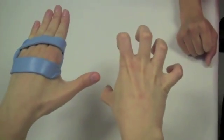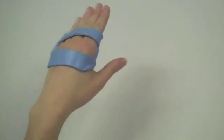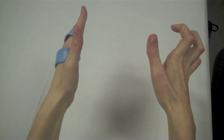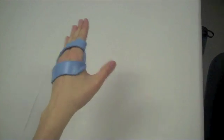Note how this splint prevents claw hand deformity. Specifically, it blocks MCP hyperextension and keeps fingers slightly flexed at the MCP joints.